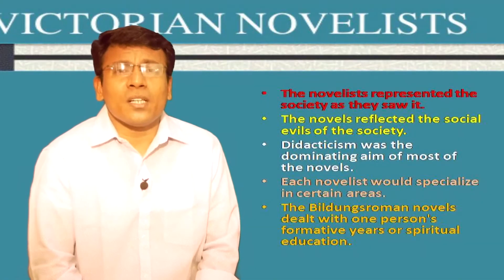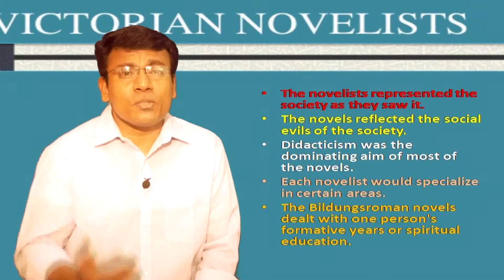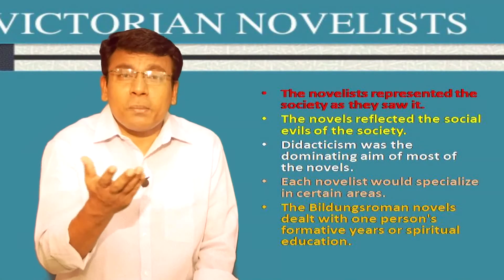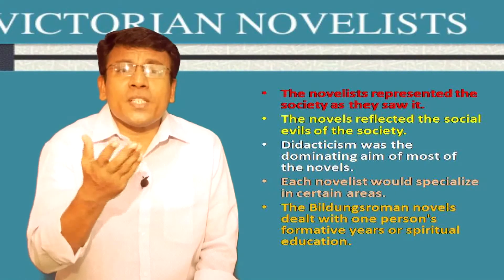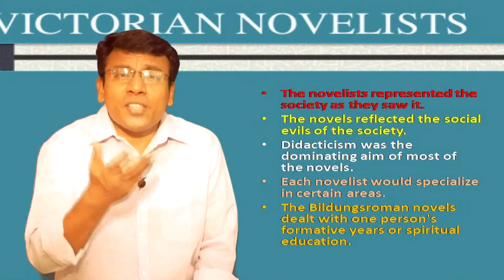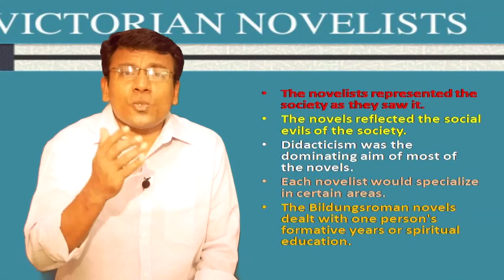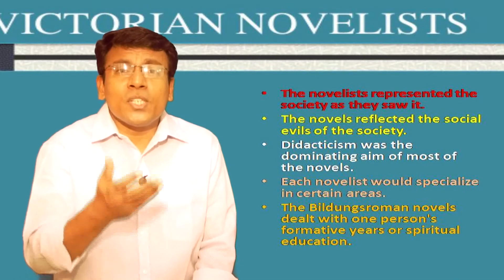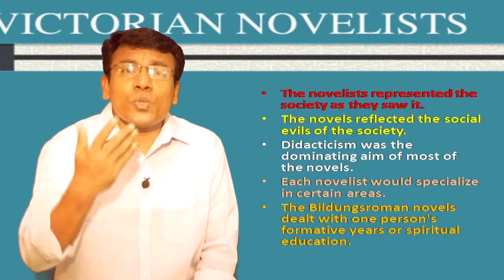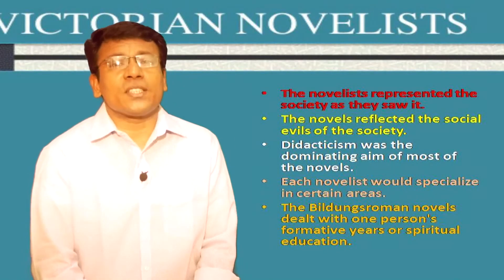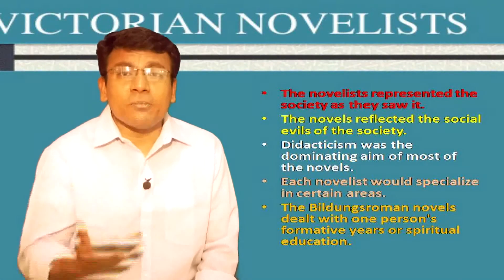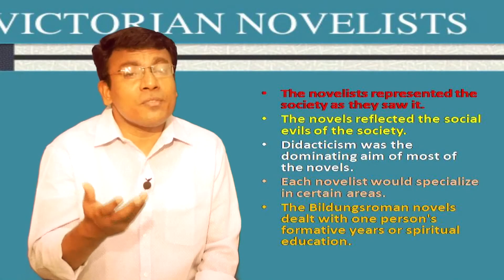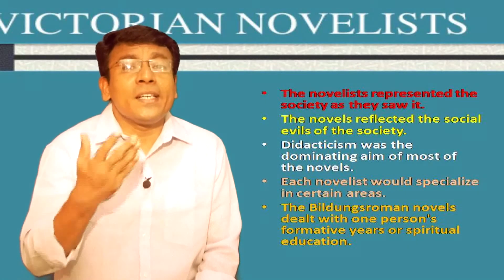The novelists represented the society as they saw it — they tried to present reality as it was. The novels reflected the social evils of the times, and this would stimulate people to find solutions for those evils. Thus the novels had an educating element; in other words, didacticism was the dominating aim of most Victorian novels.